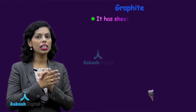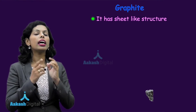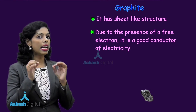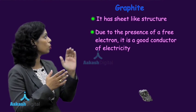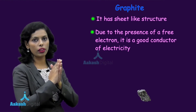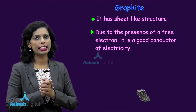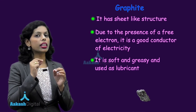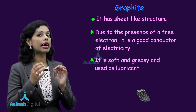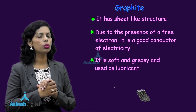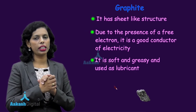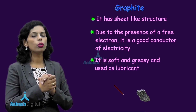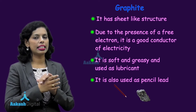Then we discussed the next allotrope, graphite. Graphite has a sheet-like structure and there is one free electron, that is why it is a good conductor of electricity and heat. Graphite is soft and greasy, that is why it is used for lubrication and it is also used in pencil lead.